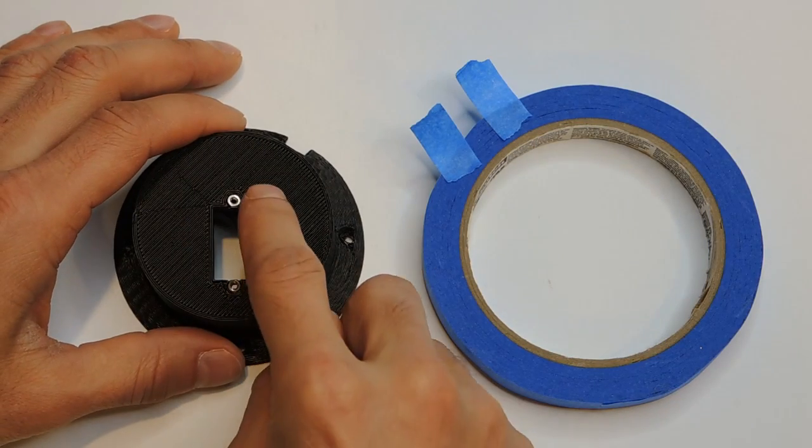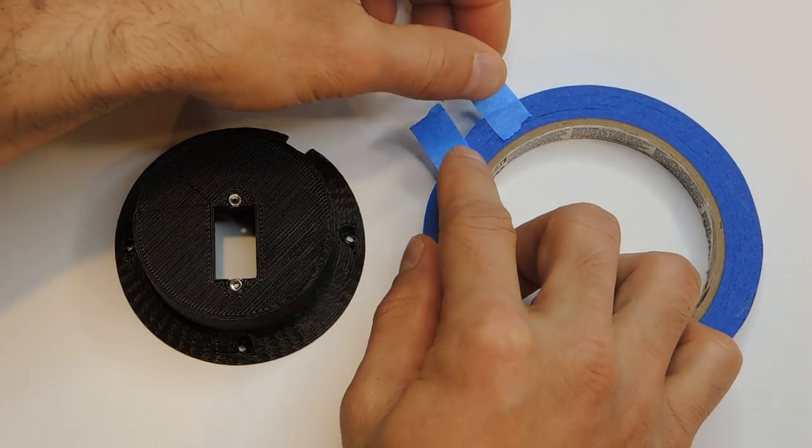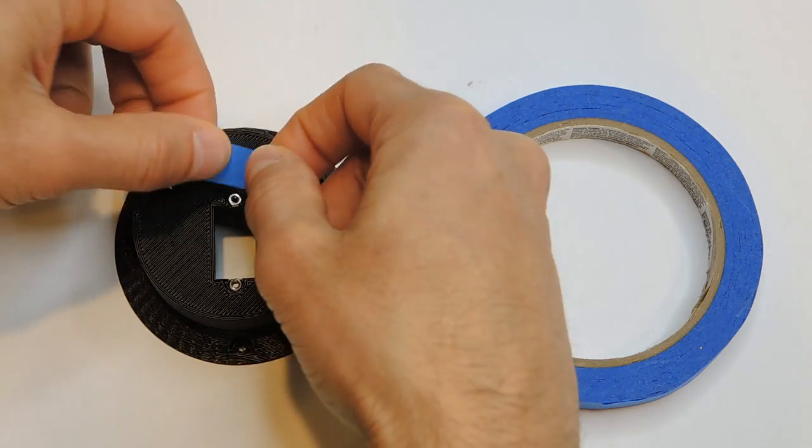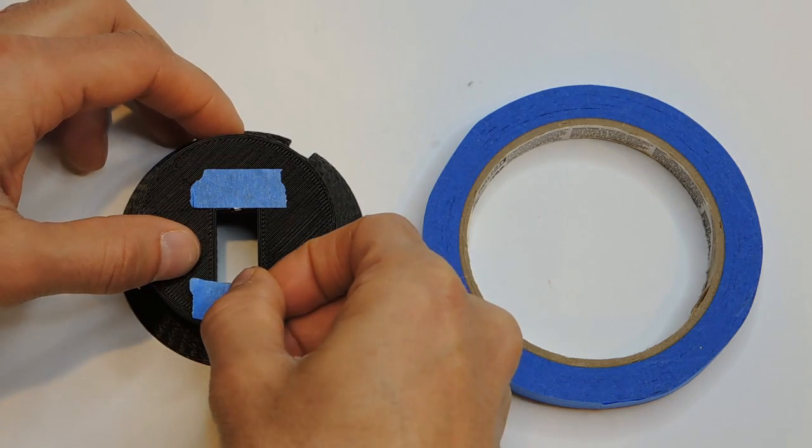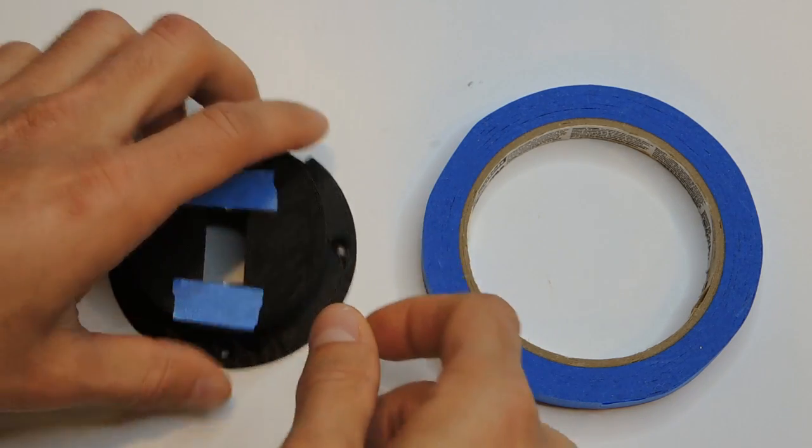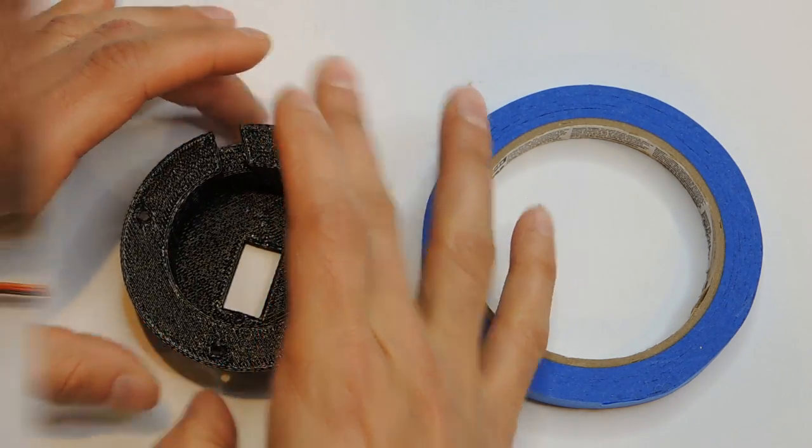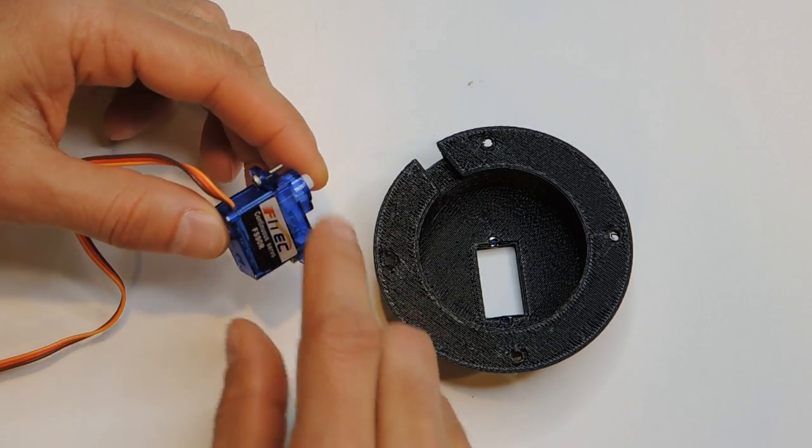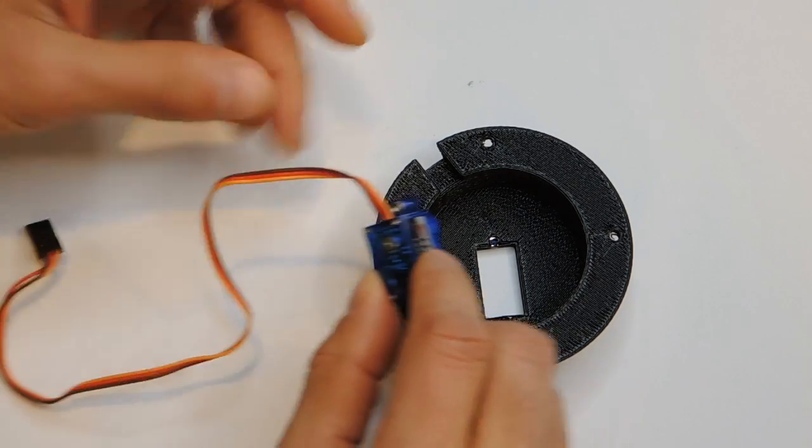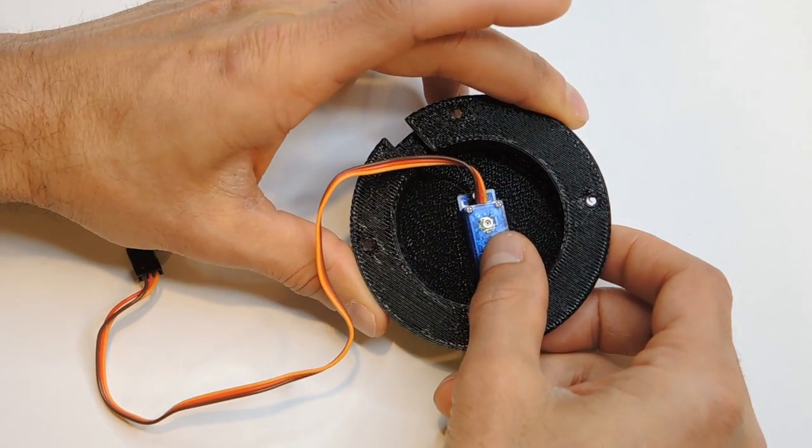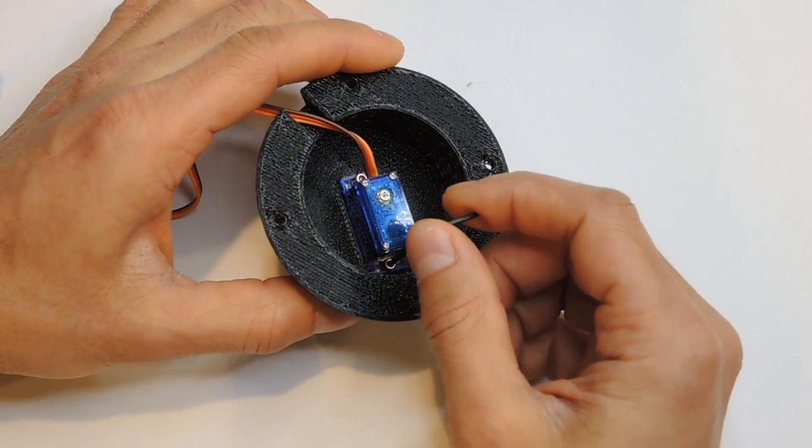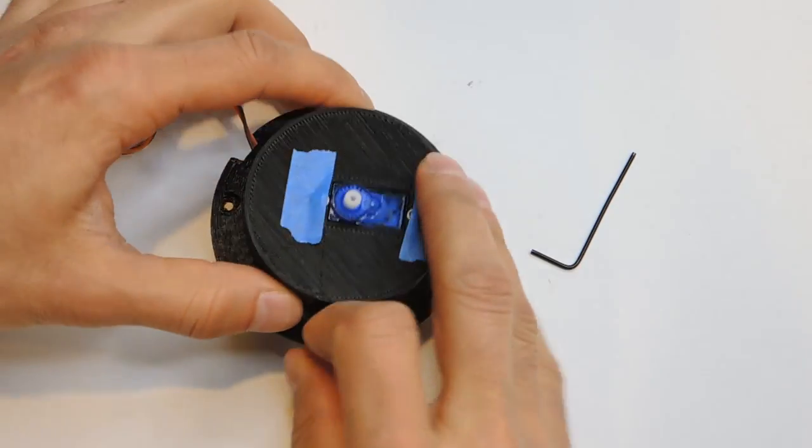Install two M2 nuts into the top of the base. Use painter's tape to retain them. Then flip the base over. Insert two M2 screws into the servo and then insert the servo into the base in this orientation. After tightening the screws down, flip the base over and remove the painter's tape.